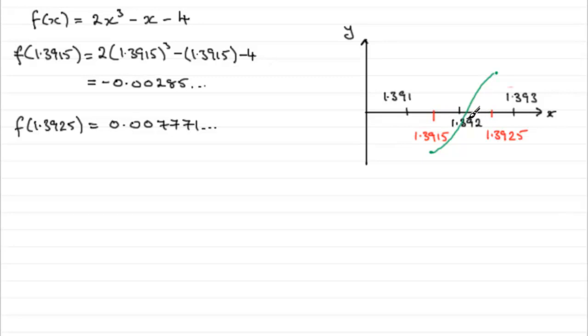So therefore, we can say that because there's been a change in sign going from minus to plus in this interval, and the curve is continuous, that the root must be 1.392 to three decimal places.